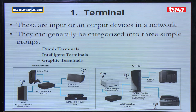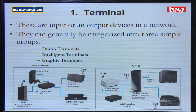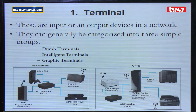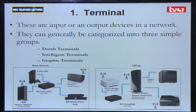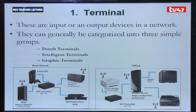An intelligent terminal is a terminal that has its own processing capability — it has a processor, memory, and a disk for storage, and it can perform its functions as a unit on its own. A graphic terminal is an input or output device within the network that you can use mostly to work with graphical data — videos, pictures — and therefore it has a higher processing capability to handle graphical form data.